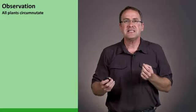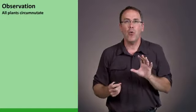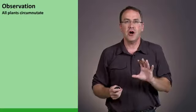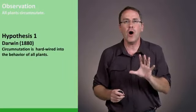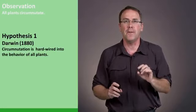This led to two different hypotheses about why plants circumnnutate. Darwin said in the 1880s that circumnutation is hard-wired into the behavior of all plants.